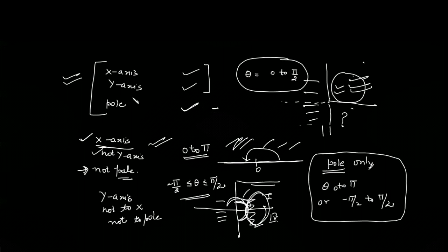So these are the key points to remember when drawing the polar curve. If all symmetries are present, it is sufficient to consider theta varying in the first quadrant, 0 to π/2. If symmetrical about the x-axis only, consider 0 to π. If symmetrical about the y-axis only, consider −π/2 to +π/2. If symmetrical about the pole only, consider either 0 to π or −π/2 to +π/2.